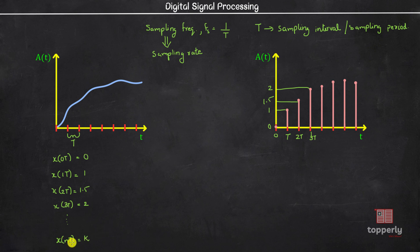Now this t present here with n possesses a problem. What if the time period of sampling is not an integer? Say the value of t is 0.3. Then this sequence will look like x of 0 equal to 0, x of 0.3 equal to 1, x of 0.6 equal to 1.5, x of 0.9 equal to 2, etc. to x of 0.3n equal to k. But this doesn't look very attractive.